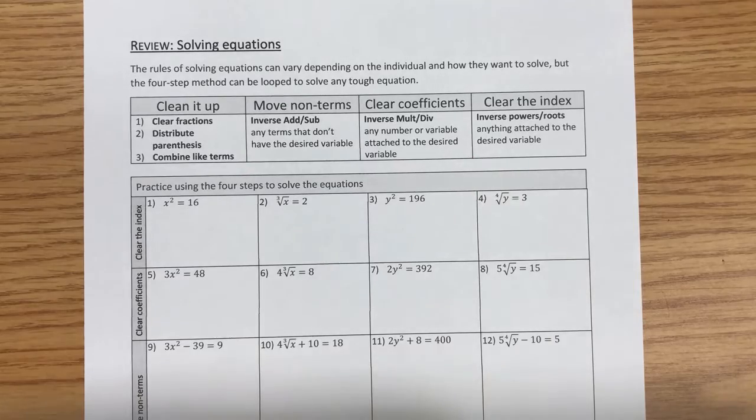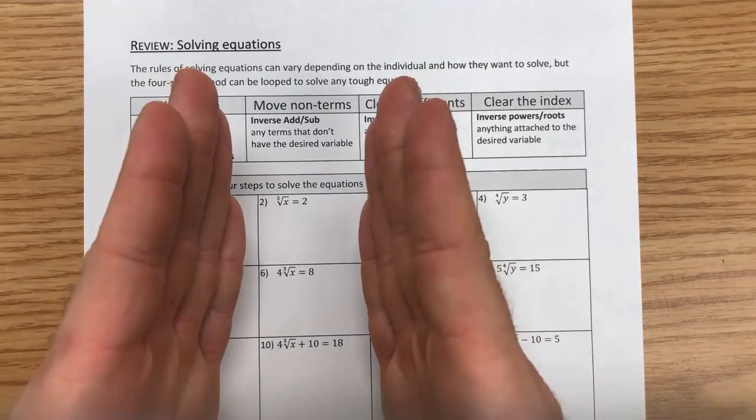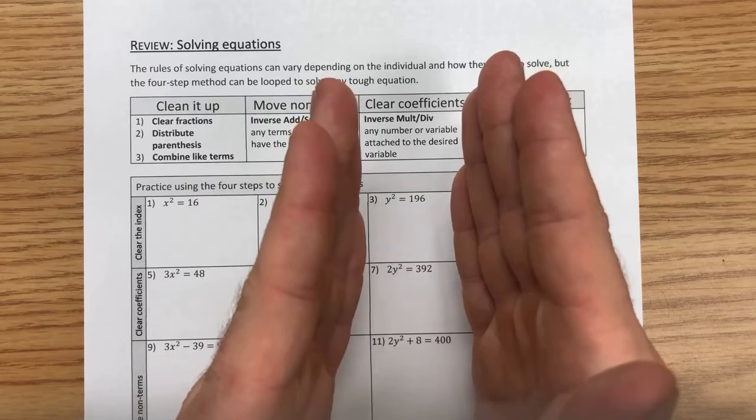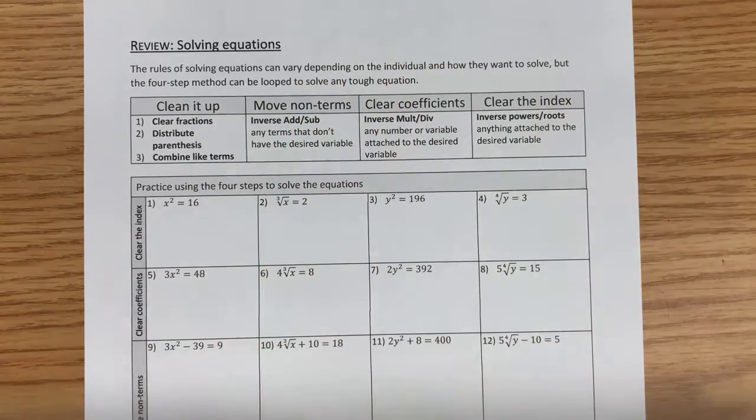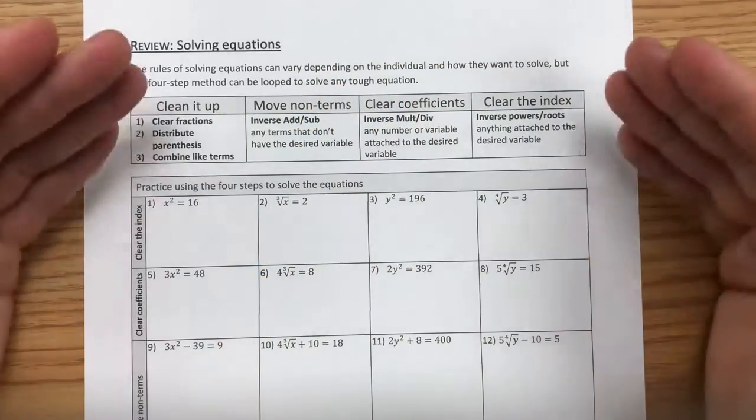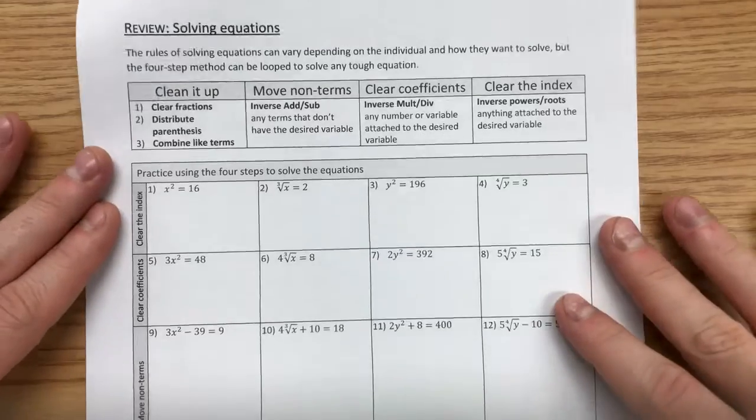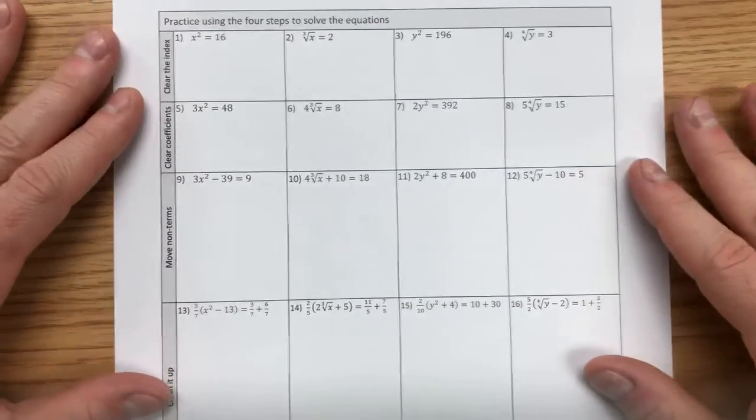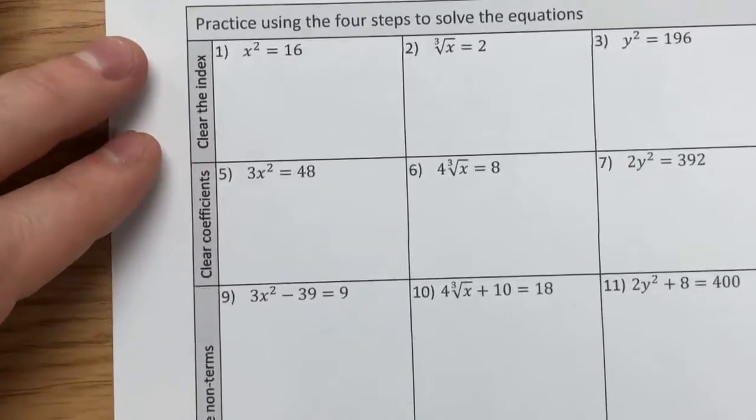Next step would be coefficients. Once we've isolated the term that we're trying to solve for, we get rid of any coefficient that it has. And then we get rid of any power or root by clearing the index. So with these four steps, you can pretty much solve any linear equation.